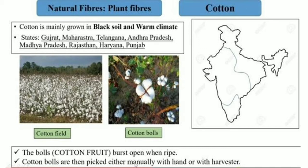The most important plant fiber is cotton. Cotton is mainly grown in black soil and warm climate. The states which produce cotton are Gujarat, Maharashtra, Telangana, Andhra Pradesh, Madhya Pradesh, Rajasthan, Haryana, and Punjab. During the production of cotton, the balls — that is the cotton fruit — burst open when they ripen. These cotton balls are then picked either manually by hand or with a harvester.